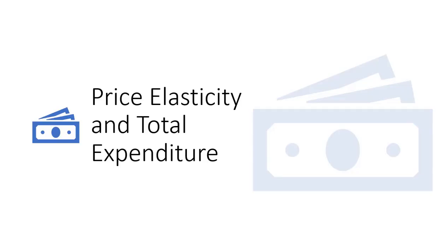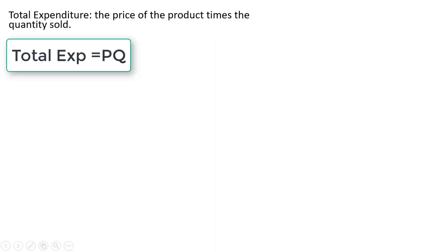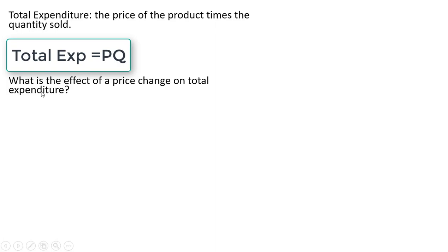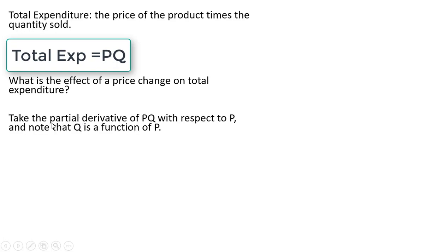Hello, in this video we're going to look at price elasticity and total expenditure. Total expenditure is the price of the product times the quantity sold — just price times quantity. We want to find out the effect of a price change on total expenditure.